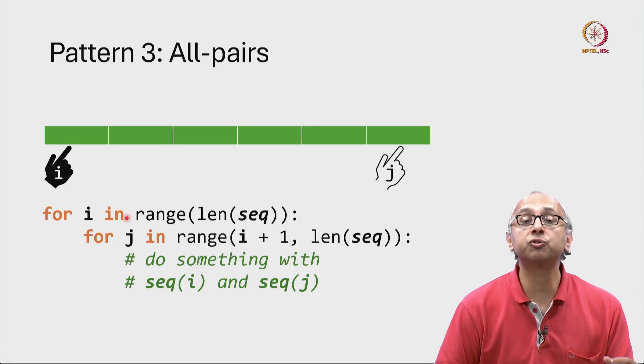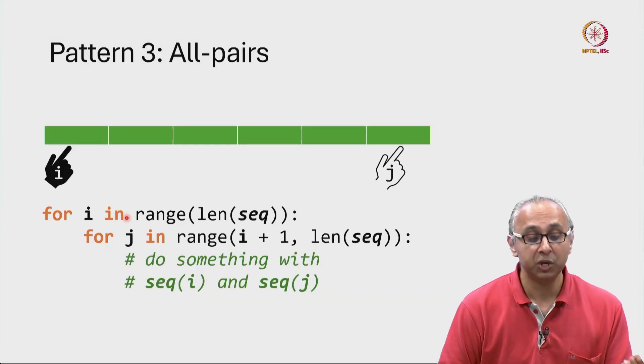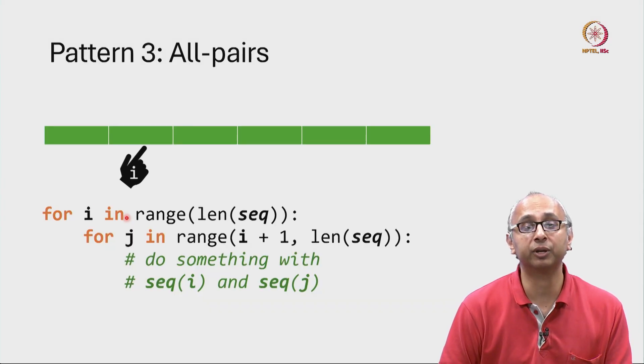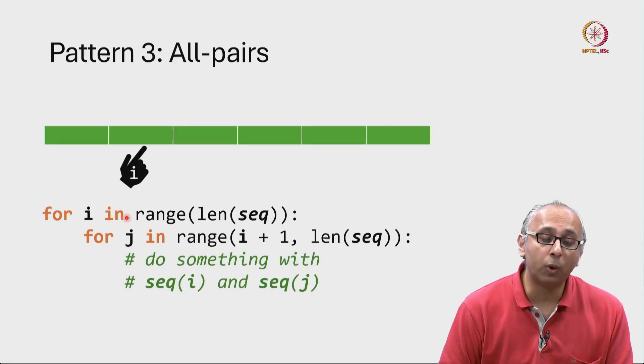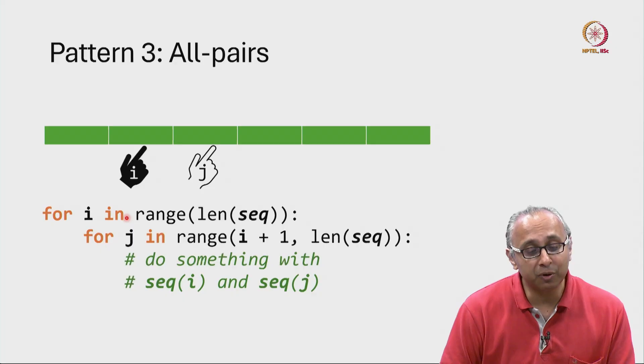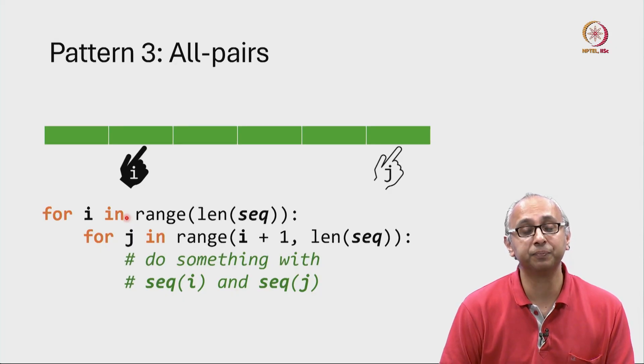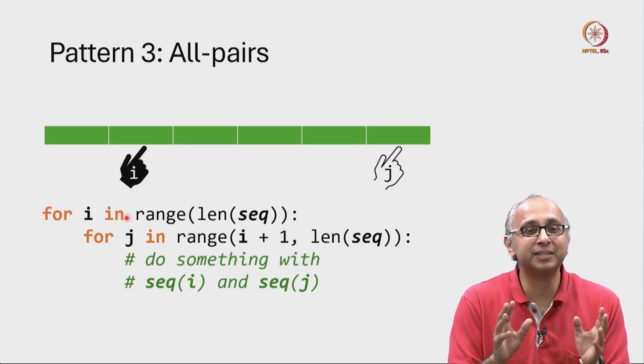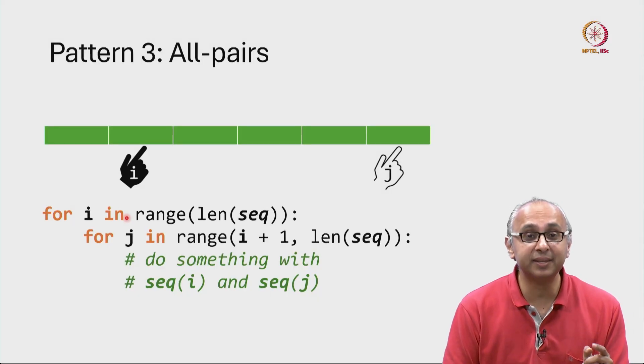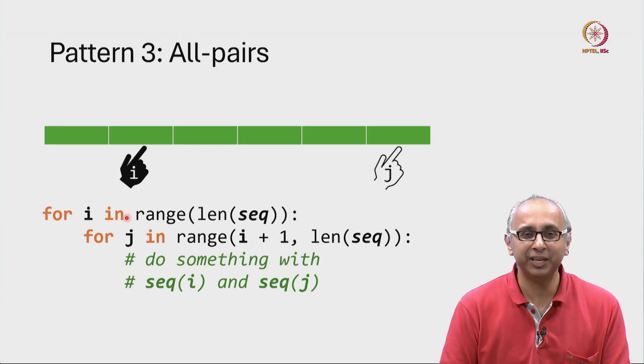then you go back and try the next value of I. So the I-finger will now move to the next location. The J-finger will start one place after that. And then we will examine all values after that. So you can see how this examines all pairs. It holds an index I fixed and examines all future indices. Then it moves the index I and it examines all future values. So it keeps these two fingers.